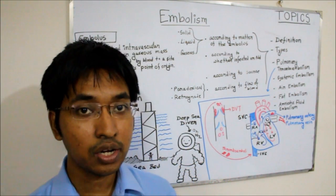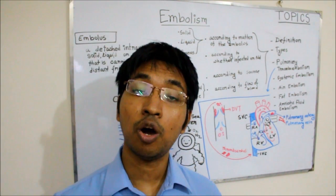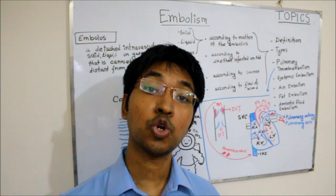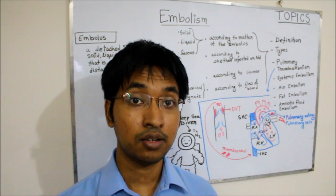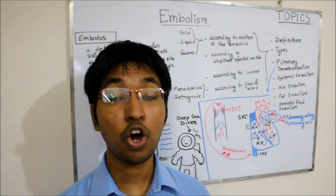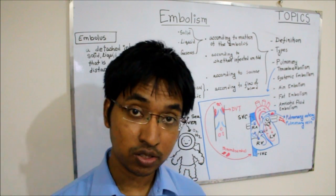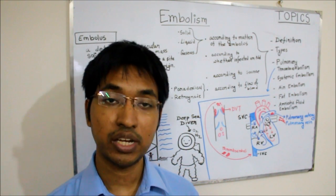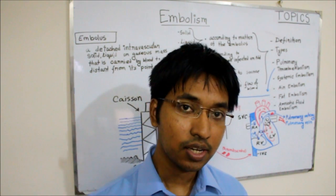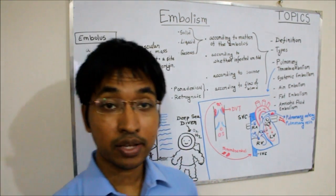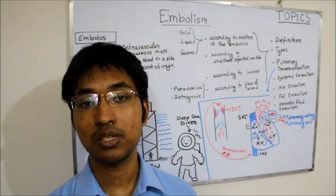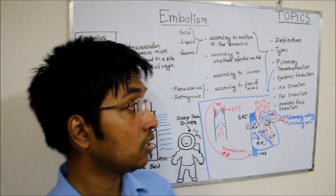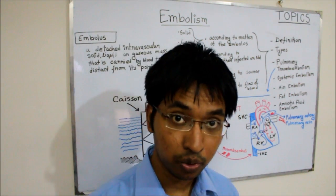Always remember, thrombus is the most common cause of embolism. There is often a term used — thromboembolism — indicating that this embolus has originated from a solid thrombus. Almost 99% of cases of embolism originate from thrombus. Now that we have explained the definition of embolism and embolus, we will move on to the types of embolism.